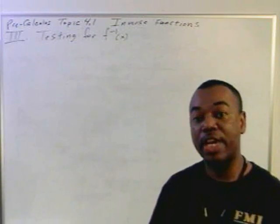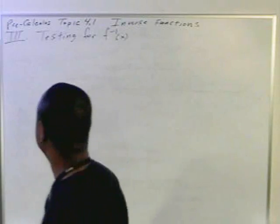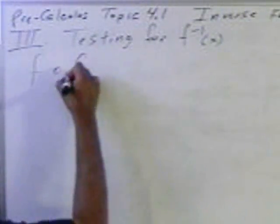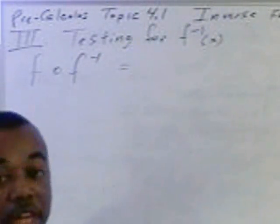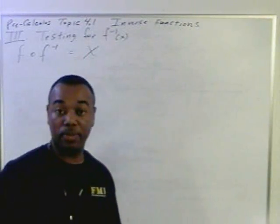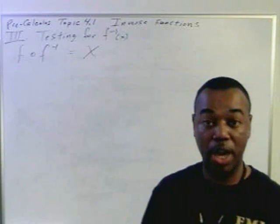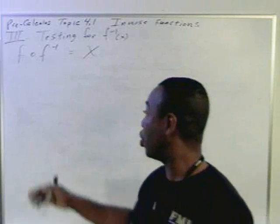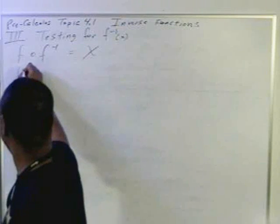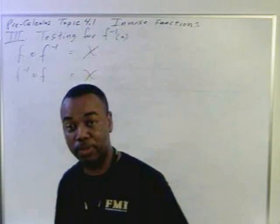Next, we want to learn a property that will test to see if a function is actually the inverse of another. The property is this. If you take a function and compose it with its inverse, the output of that composition will be x. Again, a function and its inverse, when they are composed together, will give you x. If you do not get x, then you'll know that these two were not composites. And you can also check this by taking f inverse composed with f as well. And again, you should get x.